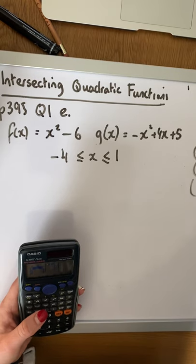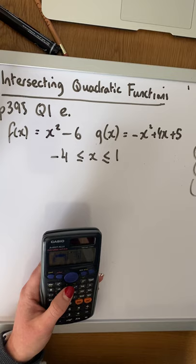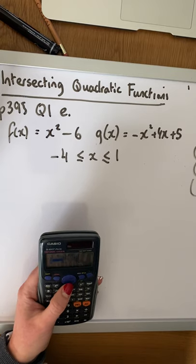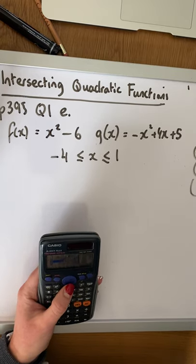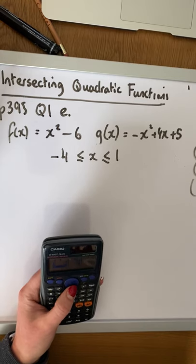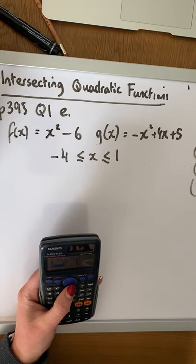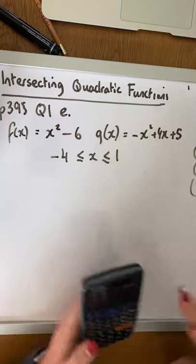And we are looking at the following coordinates. So we have minus 4, minus 27. We have minus 3, minus 16, minus 2, minus 7. We have minus 1, 0. 0, 5. And 1, 8. Okay.